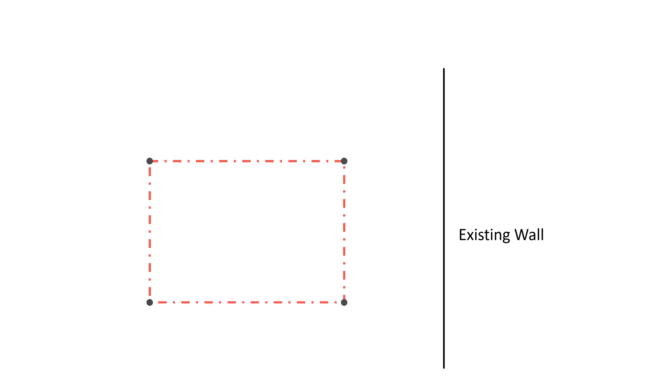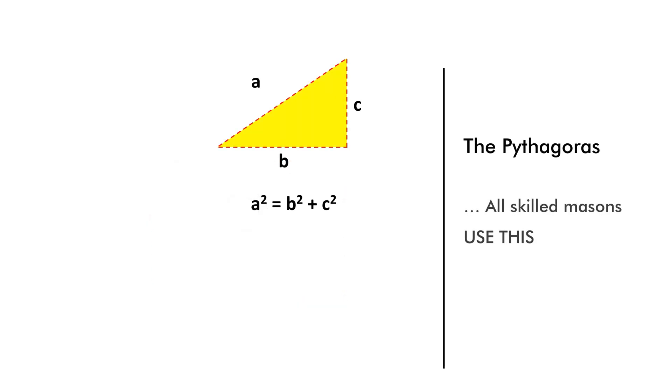You would be surprised that many buildings don't have their layouts done properly and are not perfect rectangles. The answer to this is very simple: the Pythagoras theorem. Almost all skilled masons use this, and those who don't end up giving their clients parallelograms.